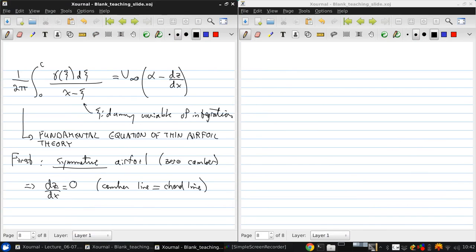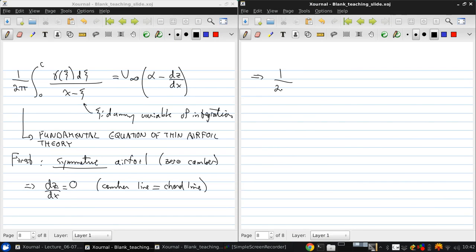So then we get one over two pi integral from zero to c gamma xc over x minus c equals simply v infinity alpha. This is not a function of x. This is a constant. So essentially now, the airfoil is being treated as a flat plate.